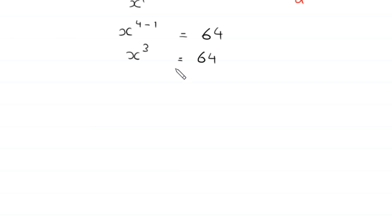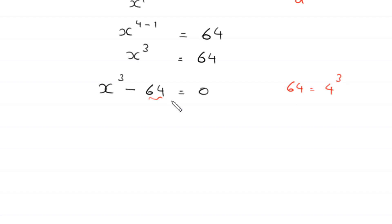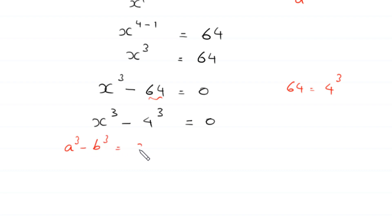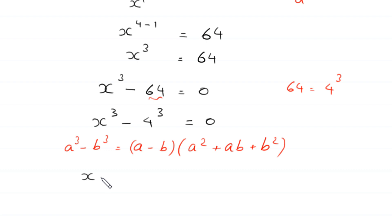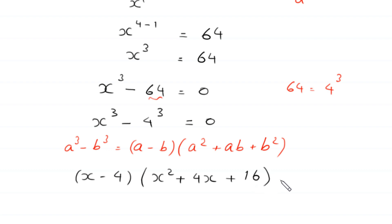Now we move 64 to the left-hand side, so the equation becomes x cubed minus 64 equals 0. Since 64 equals 4 cubed, this becomes x cubed minus 4 cubed equals 0. Using the algebraic identity a cubed minus b cubed equals (a minus b)(a squared plus ab plus b squared), this becomes (x minus 4)(x squared plus 4x plus 16) equals 0.